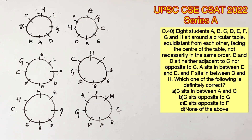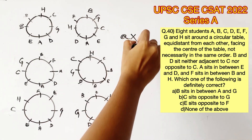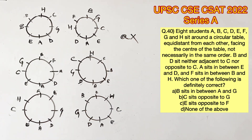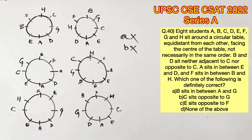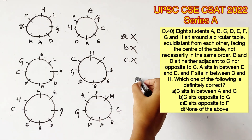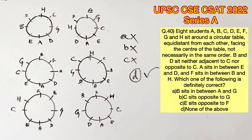Now we have all the possible arrangements. We need to find which option is definitely true in all cases. Option A says B sits in between A and G — not true in all cases, so eliminate A. Option B says C sits opposite to G — also not true in all cases, so eliminate B. Option C says E sits opposite to F — not true in all cases either, so eliminate C. Option D says none of the above. Therefore, option D is the correct answer.